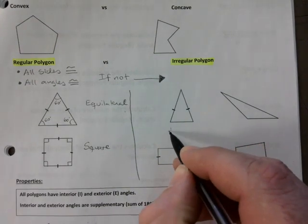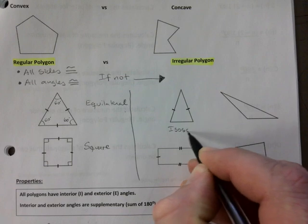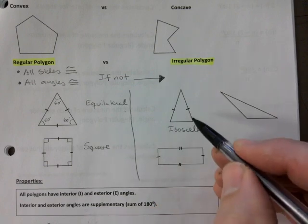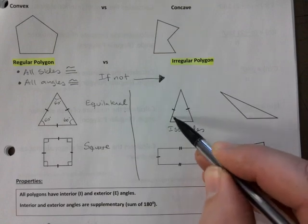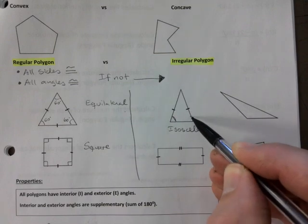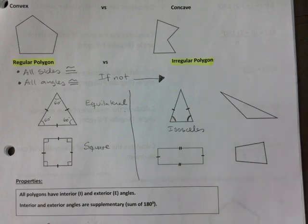So for example, an isosceles triangle. An isosceles would be considered irregular. Because it only has two sides that are equal. And yeah, you can even argue it has two angles that are equal. But that's it. Like it doesn't have the all part.